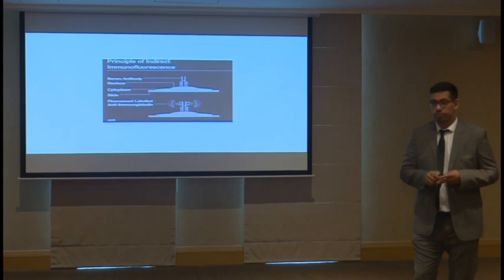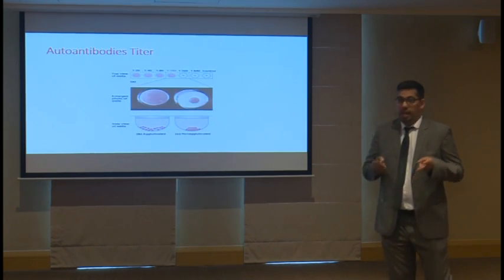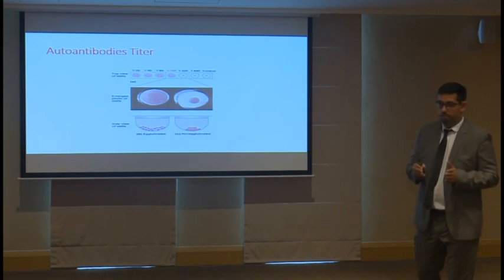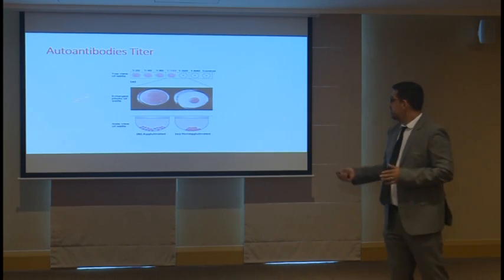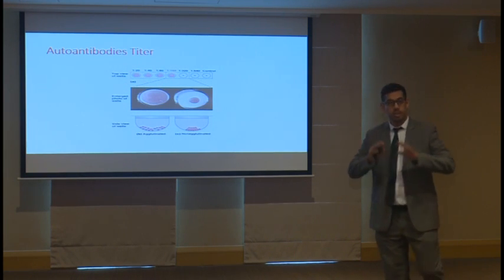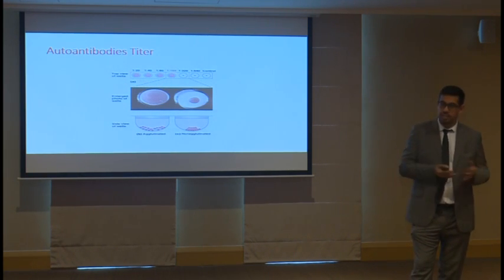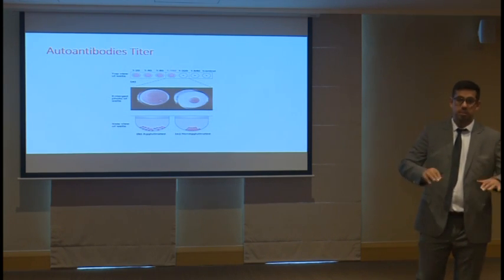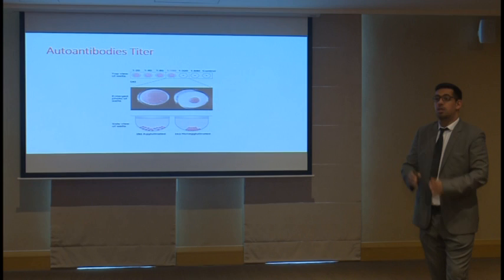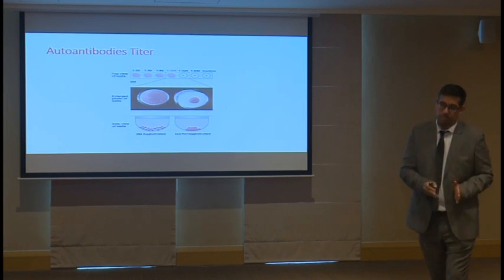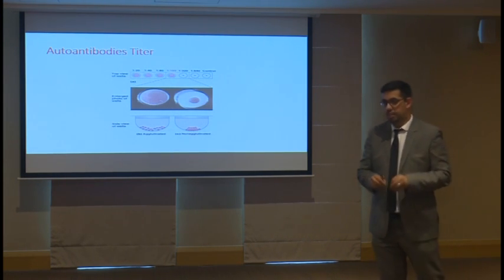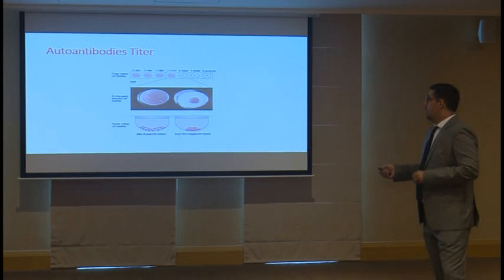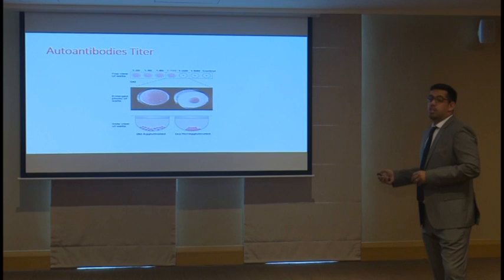How do we report ANA? We report it in two forms. Number one: the titer. They will dilute the sample and report an estimate — a number. The positive cutoff is 1 to 160. That was approved, but in the last consensus meeting around 2016, the agreed consensus cutoff was set at 1 to 160 as the threshold considered positive.